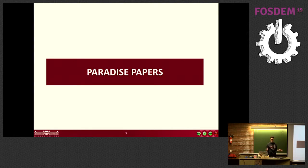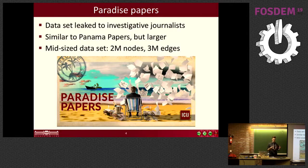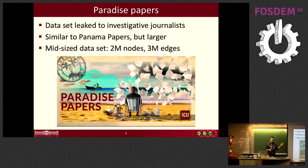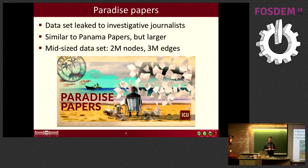You have probably heard about the Paradise Papers — a dataset that was leaked to a set of investigative journalists. It's somewhat similar to the Panama Papers but more complex and bigger. In big data terms it's not huge: two million nodes and three million edges, but it has been used successfully to uncover interesting and shady offshore deals. This is one of those use cases where graphs are used for the greater good — it can help us understand how the world works and reduce corruption.